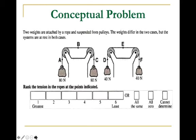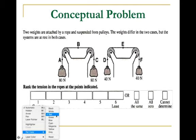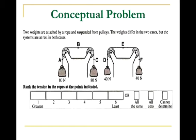What about this one? Two weights are attached to the rope and suspended by pulleys. The weights differ in the two cases but they're both at rest. Rank the tension in the ropes. If you solve this one, you'll discover that the tension is of course 80 newtons here if this thing is stationary. 80 newtons here, and because it has to be uniform throughout, A, B, and C are all at 80 newtons. Whereas D holding up a 40 newton object is going to be 40 newtons. E is going to be 40, F is going to be 40. These are all 40.